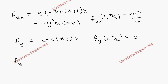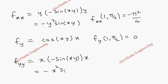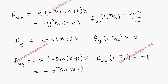Then fyy: differentiating fy = x·cos(xy) with respect to y, x is constant, and the derivative of cos is -sin. So fyy = -x² · sin(xy). Then fyy(1, π/2) = -1² · sin(π/2) = -1 · 1 = -1.